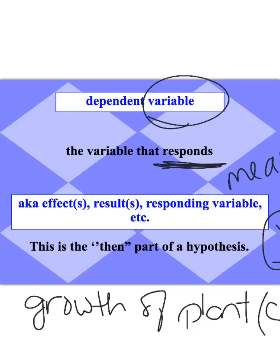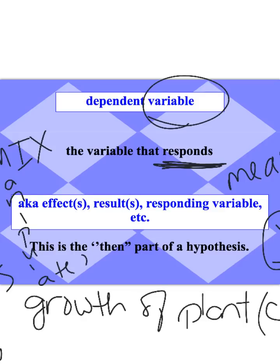To help you remember that, you can use the mnemonic DRYMIX. Our dependent — sometimes called the responding variable, the one that responds to the stimulus — goes on the y-axis. Our manipulated or independent variable is on the x-axis. So DRYMIX: Dependent or Responding variable on Y, Manipulated or Independent on X.